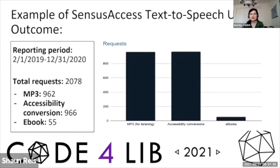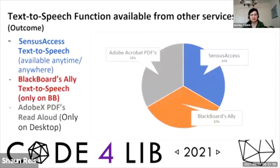We wanted to develop marketing materials aimed at faculty that they could appreciate. So we created a LibGuide aimed at faculty, promoting the tool not as a time saver for students, but as a way to offer alternative learning opportunities. In the past two years, from February 1st to December 31st, there were a total of 2,078 usage requests. This usage seems low. However, with recent technology development, text-to-speech functions have been included in other services — Blackboard has adopted Ally, which has a text-to-speech function, and Adobe recently made PDF Read Aloud available on desktop. However, both have service limits.